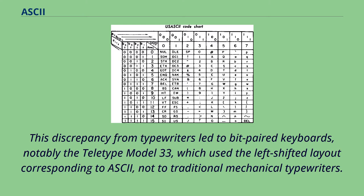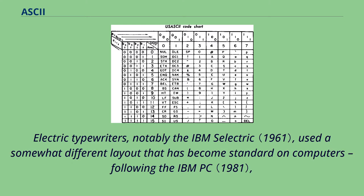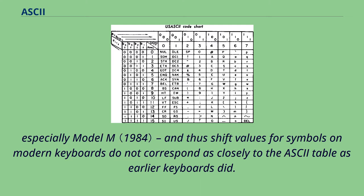This discrepancy from typewriters led to bit-paired keyboards, notably the Teletype Model 33, which used the left-shifted layout corresponding to ASCII, not to traditional mechanical typewriters. Electric typewriters, notably the IBM Selectric, used a somewhat different layout that has become standard on computers, following the IBM PC, especially Model M. Thus shift values for symbols on modern keyboards do not correspond as closely to the ASCII table as earlier keyboards did.